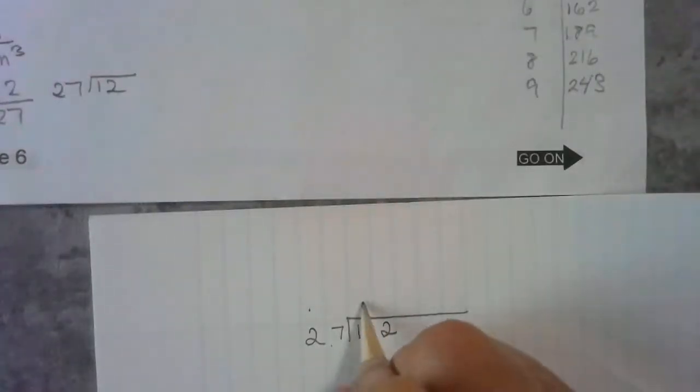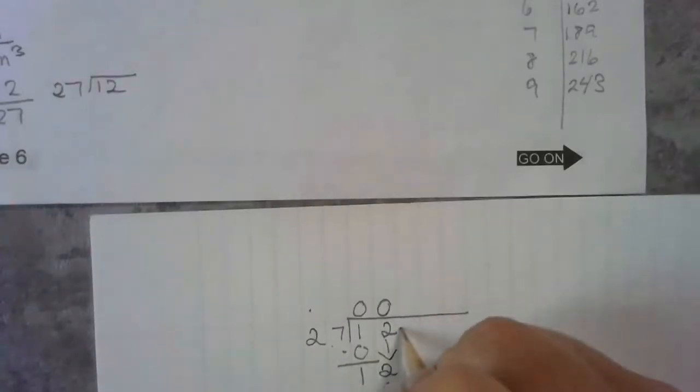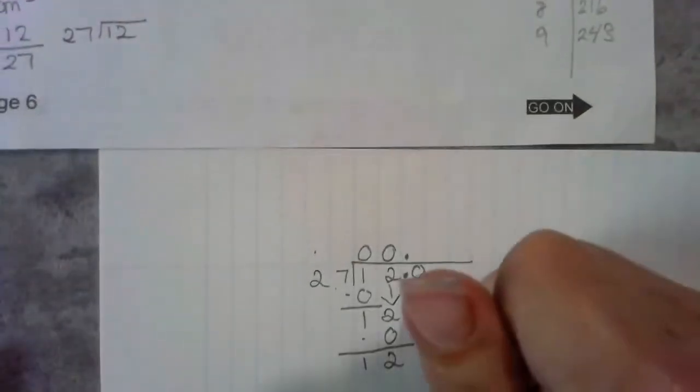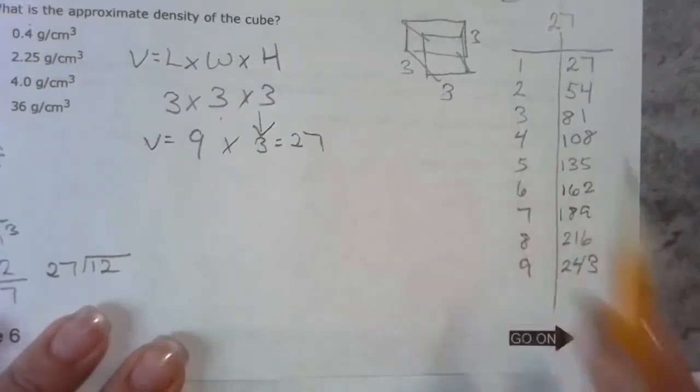27 cannot go into 1. I'm keeping my place value all lined up. 27 cannot go into 12. I need to add my decimal because I'm adding a 0. Then I bring this down. 27 can go into 120. It can't go 5, but it can go 4 times.